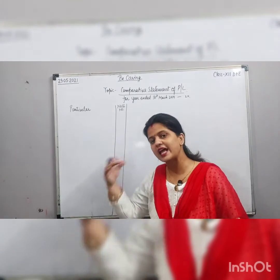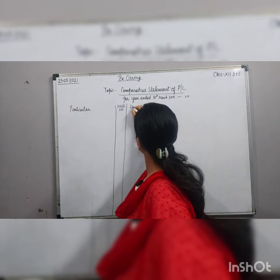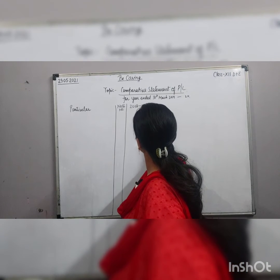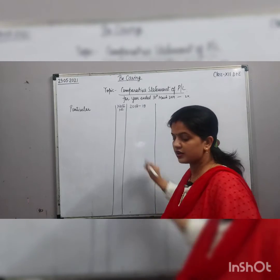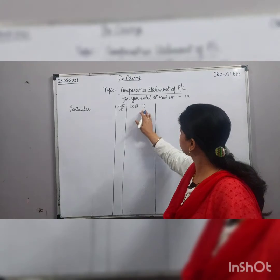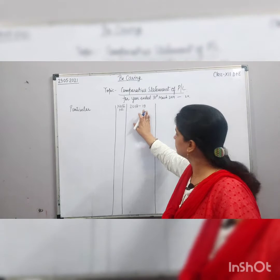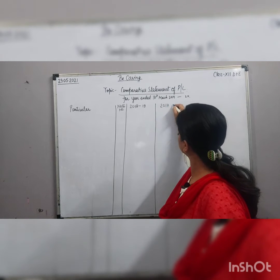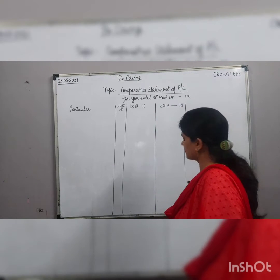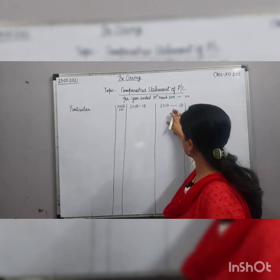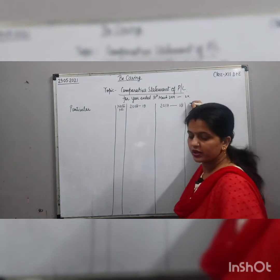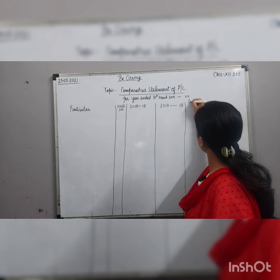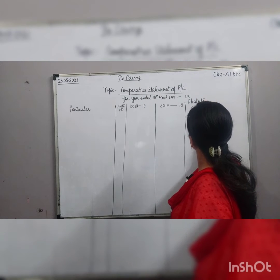Next comes the current year column — for example, 2018-19 — and the previous year column, such as 2017-18. After that, we add a column for absolute change, which shows increase or decrease. Finally, there is a column for percentage of increase or decrease.